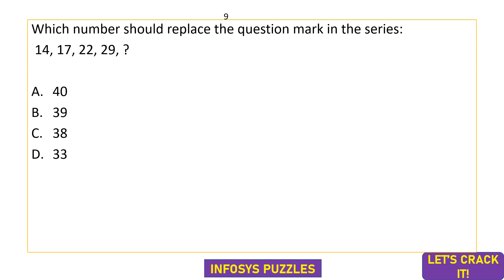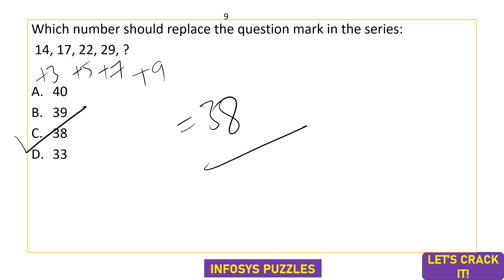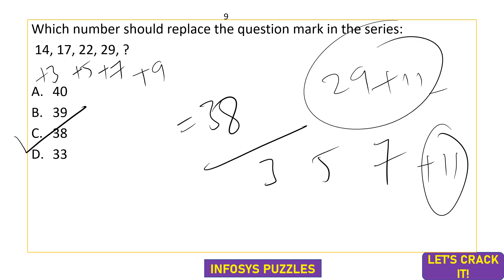Infosys can ask questions in different ways — numerical logic is required throughout. Here: 14, 17, 22, 29 — adding consecutive odd numbers 3, 5, 7, so next is 29+9 = 38; Option C. But there's another possibility: adding prime numbers 3, 5, 7, so the next prime is 11, giving 29+11 = 40; Option A could also be valid. Both logics are possible, so don't worry.